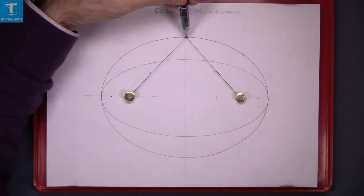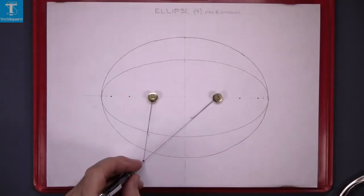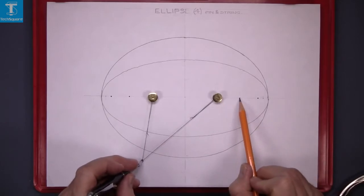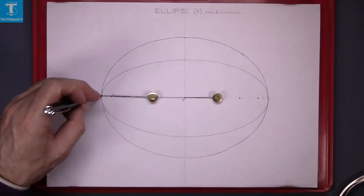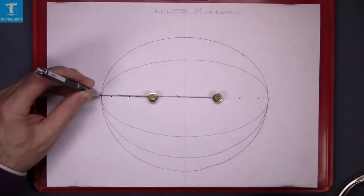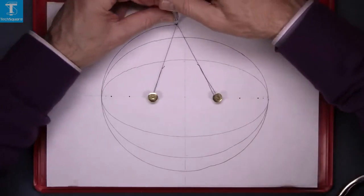Now I am going to move the pins into the next position. The pins have been moved into the next position. There is the third ellipse now, and again the minor axis is increasing in length as the pins get closer to the center.